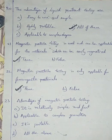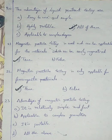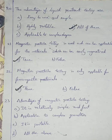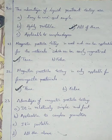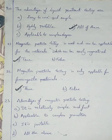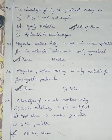Question number 23. The advantages of magnetic particle testing are: it is relatively simple and fast, applicable to complex geometries, and it is portable. All three are advantages. You just magnetize the material and there will be more magnetic flux at defect locations, making detection easy and fast. It is applicable to complex geometries and highly portable. So I am going with option D, all the above.